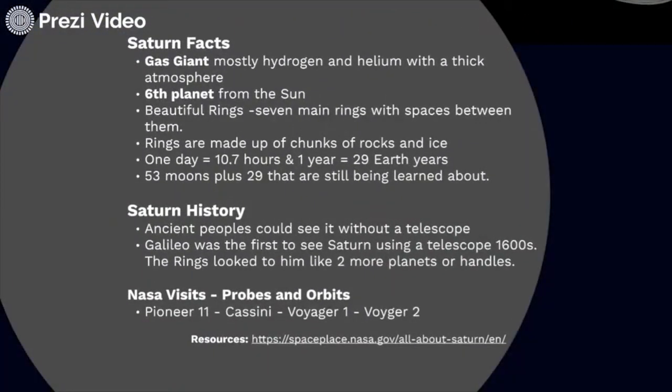Saturn is also a gas giant made up mostly of hydrogen and helium. It's got that thick, soupy atmosphere. Again, we can't land on these planets — there's no solid surface for us to land a probe on or walk on. It is the sixth planet from the sun. It has beautiful rings — seven main rings with spaces between them that really make them pop. They're absolutely beautiful. The rings are made up of chunks of rock and ice. One day is a little more than 10 hours.